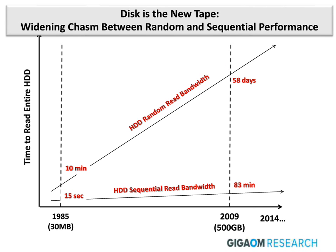Sequential reads have actually increased fairly substantially, but databases need to use random access. A mainstream disk in 1985 with 30 megabytes of capacity took 10 minutes to read all the data in random fashion, which is what a database primarily does. A mainstream disk in 2009 with 500 gigabytes of capacity took 58 days versus the earlier 10 minutes to read the whole disk. So it's harder and harder for hard disks to support the random read-write needs of a database.